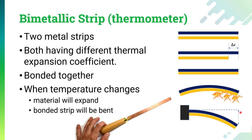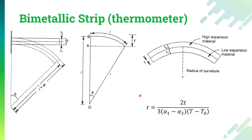The relationship between temperature and radius is given by a specific equation: the radius of curvature R equals 2t divided by 3(α₁ − α₂)(T − T₀), where α₁ and α₂ are the coefficients of thermal expansion of the two materials, T is the operating temperature being measured, T₀ is the initial bonding temperature, and the small t is the thickness of both strips. Small r represents the radius of curvature.